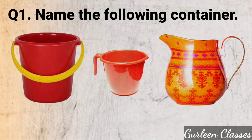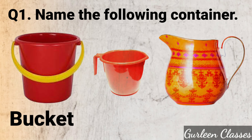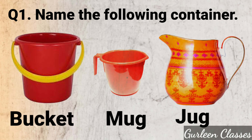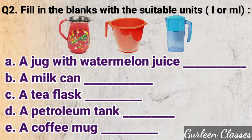Question number 1: Fill in the blanks with the suitable units, liter or milliliter. Part A: a jug with watermelon juice. Answer: milliliter, as it is a smaller quantity.